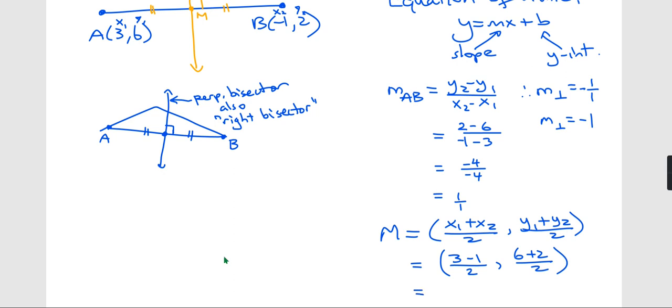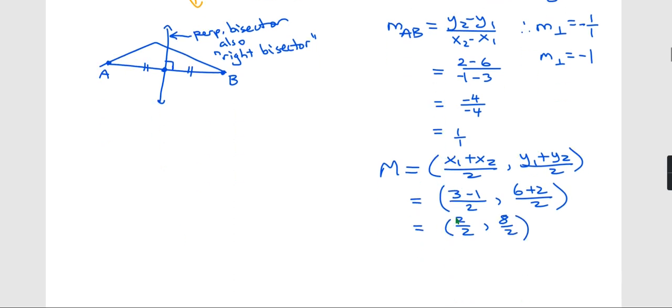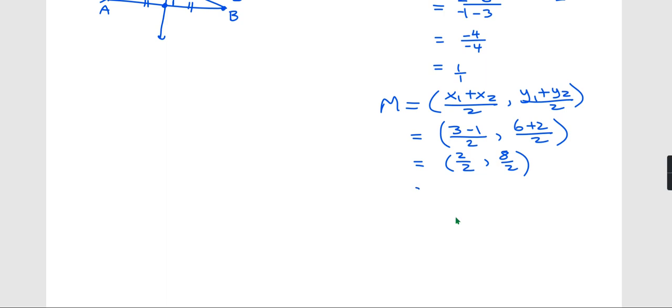Remember, we're just taking the average of the x's and the average of the y's. This is 2 over 2 and 8 over 2, which simplifies to 1, 4.